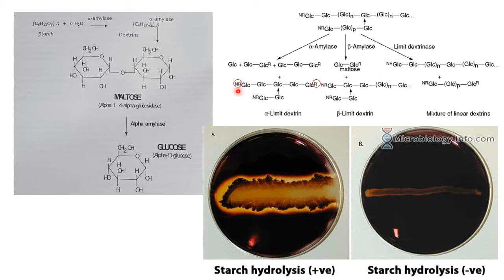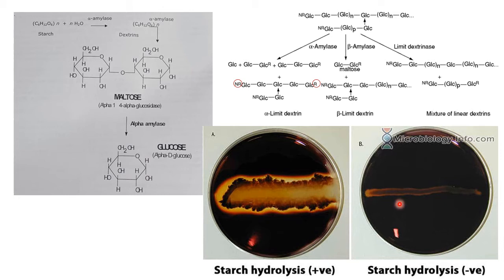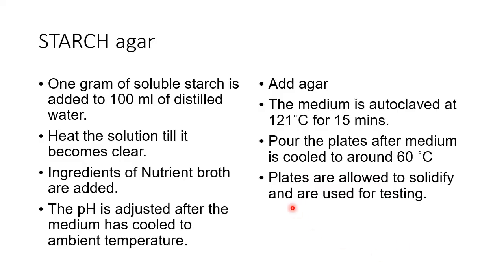You can see the non-reducing end and the reducing end. In the case of beta-amylase, the enzyme acts from the non-reducing end, whereas in the case of alpha-amylase, the 1,4 glycosidic bonds are broken internally. After adding Gram's iodine to the plate, you can observe a positive image and a negative image for starch hydrolysis — remember these images as we study the test further.